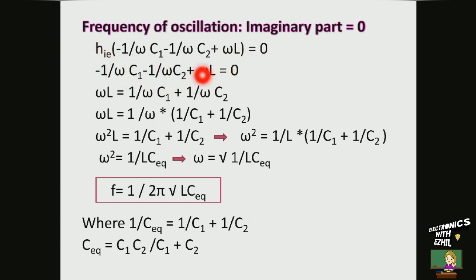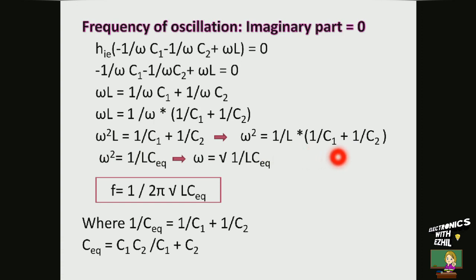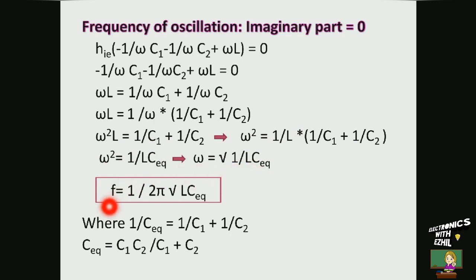Since H(E) cannot be zero, the bracketed term equals zero. Bringing the capacitive terms to the other side makes them positive. Taking 1/ω commonly out gives (1/ω)·(1/C1 + 1/C2). Bringing ω to the other side: ω²L = 1/C1 + 1/C2. Solving for ω²: ω² = (1/L)·(1/C1 + 1/C2). Replacing 1/C1 + 1/C2 with 1/C_equivalent gives ω² = 1/(L·C_eq). Taking the square root: ω = √(1/(L·C_eq)). Replacing ω with 2πf, the frequency of oscillation is f = 1/(2π·√(L·C_eq)), where C_eq = C1·C2/(C1 + C2).